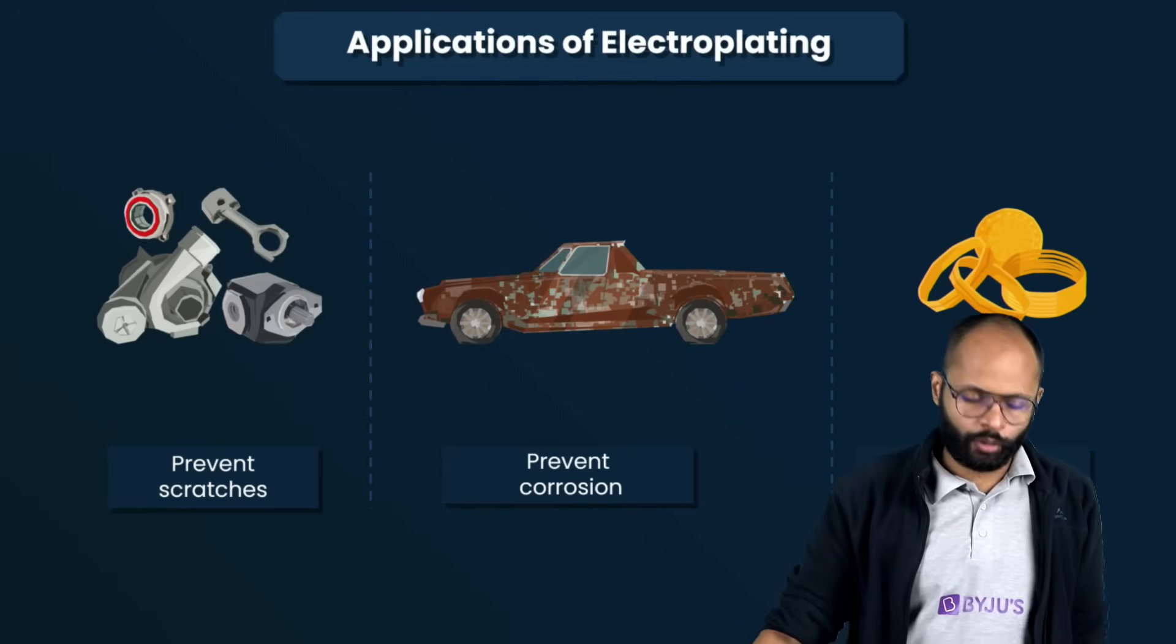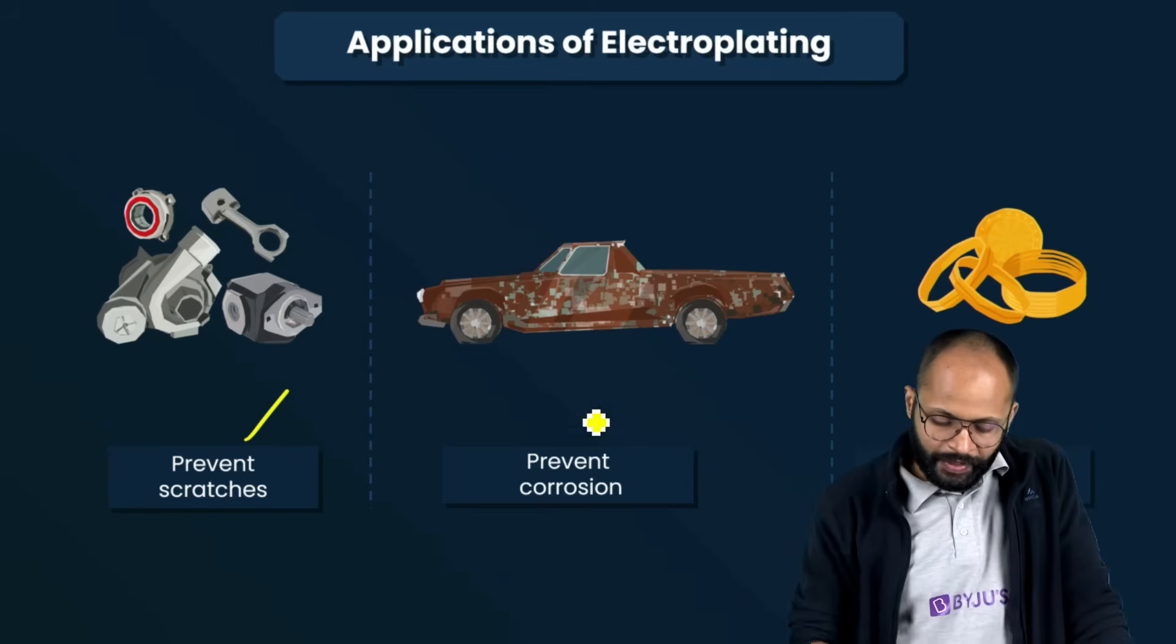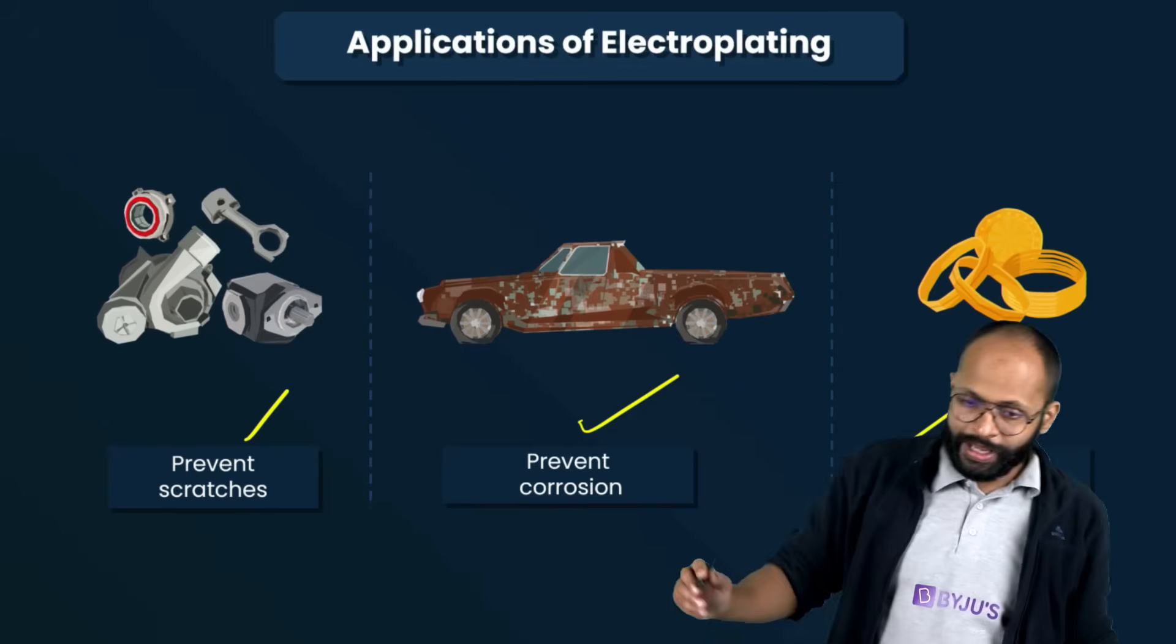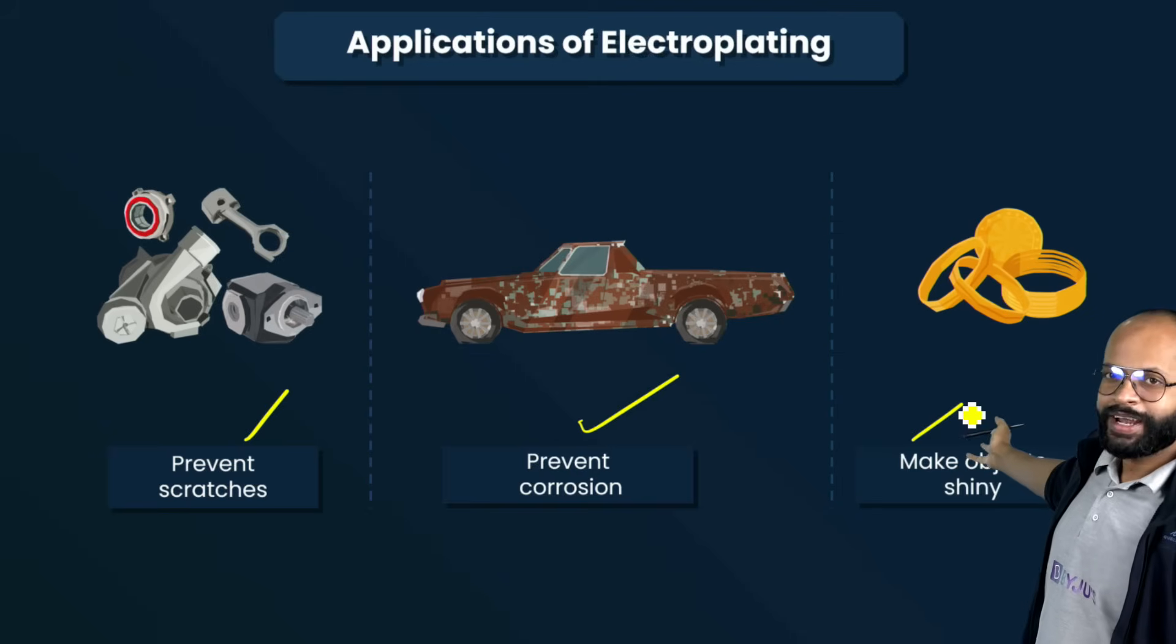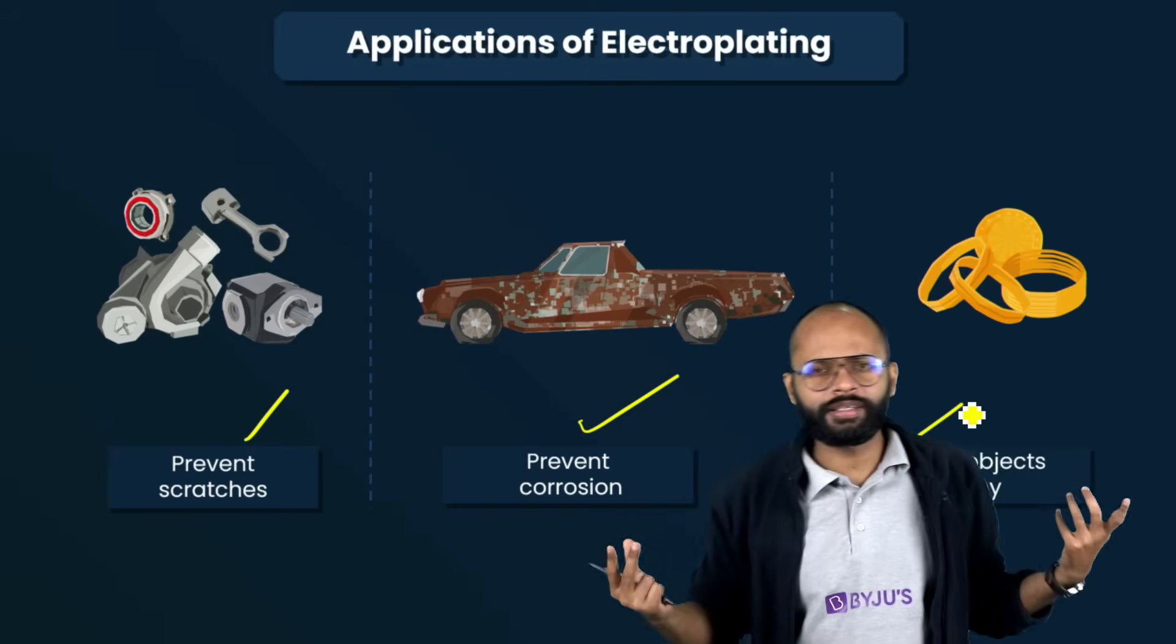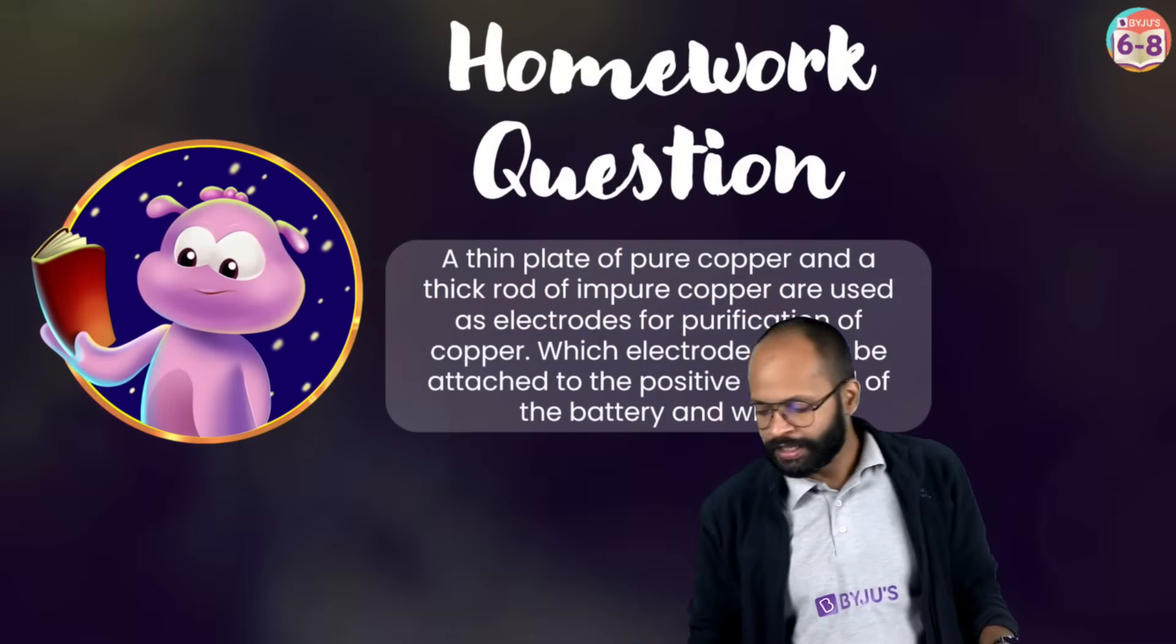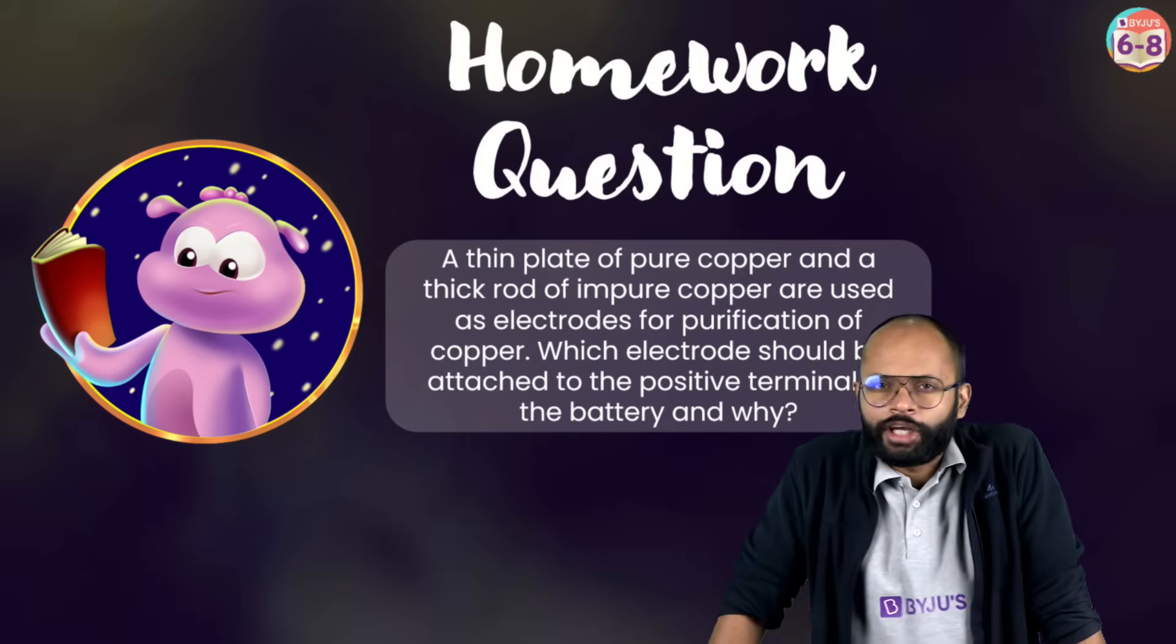Why do we do electroplating? We do electroplating to prevent scratches. To prevent corrosion. The thing is not corrupted, it is not bad. So what do they have to do? They have to coat it. To make objects shiny. Gold plating. We all know why we do it. Because gold is expensive. There's not so much gold. So what do they do? They do plating on top. It looks shiny. It looks good.